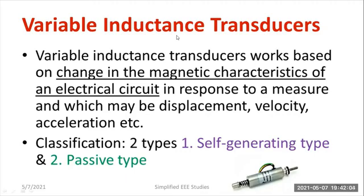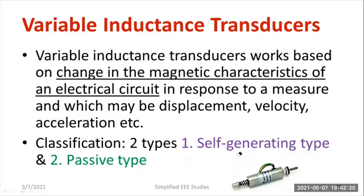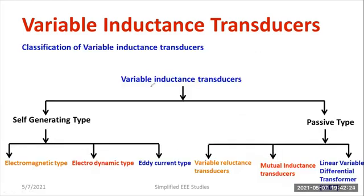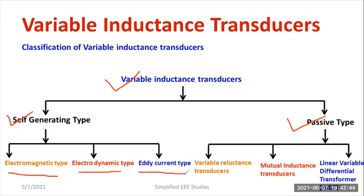There are two types of variable inductance transducer. The first one is self-generating type and another one is the passive type. The variable inductance transducers can be broadly divided into two. The self-generating type can be subdivided into three categories: electromagnetic type, electrodynamic type, and eddy current type. The passive type can be divided into three: variable inductance type, mutual inductance type, and finally linear variable differential transformer.